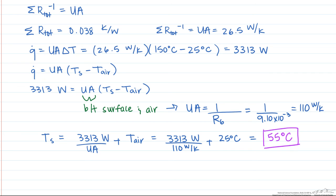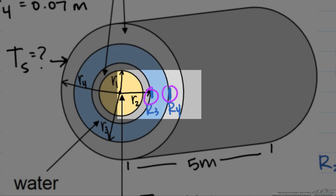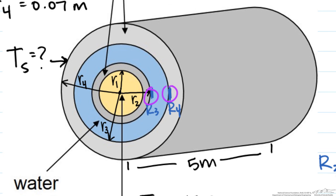One thing to be careful of: if we look back at our different resistances, we had two convective resistances for the water. That's because there was convective heat transfer from the outside edge of the first steel wall, as well as from the water to the second steel wall. If you don't include that second convective heat transfer coefficient, you'll get a temperature that can be considerably different from the 55 degrees that we calculated.